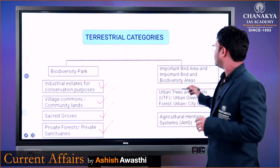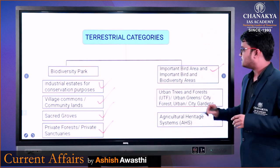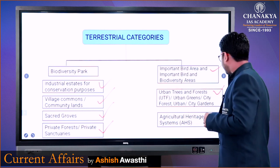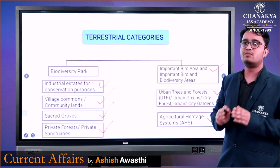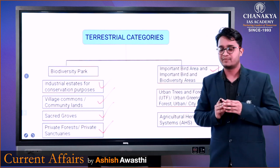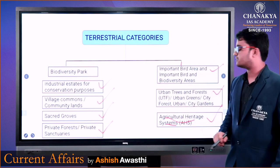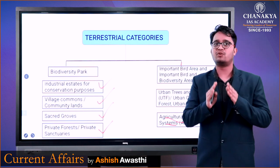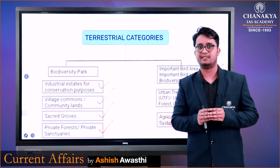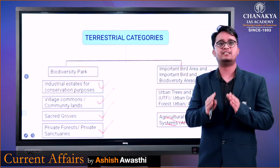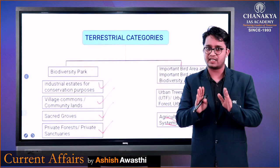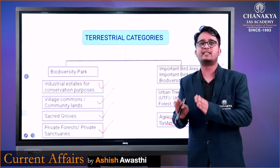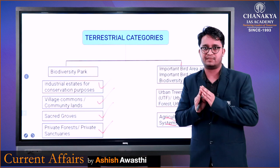इसके अलावा Important Bird Areas, Urban Trees and Forest, और Agriculture Heritage System को भी OECM का दर्जा दिया जा सकता है। Agriculture Heritage System का एक उदाहरण ओडिशा के कोरापुट में होने वाली खेती को लिया जा सकता है। हालांकि अभी उसको दर्जा नहीं दिया गया है। यह याद रखना है कि भारत में केवल एक ही साइट है जिसको OECM का दर्जा प्राप्त है।